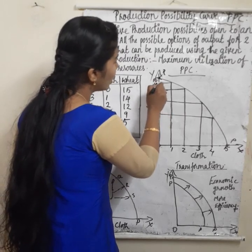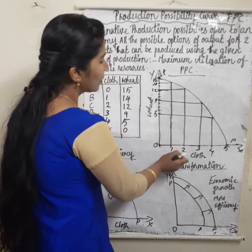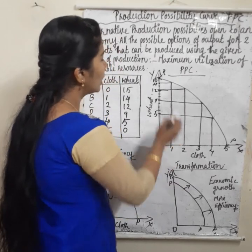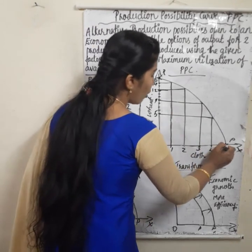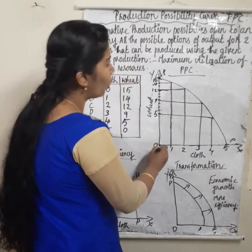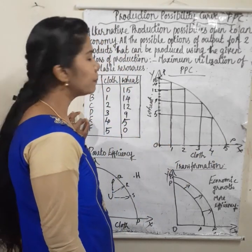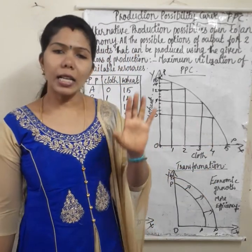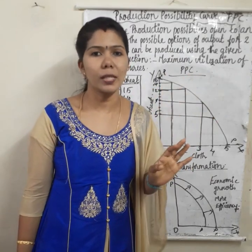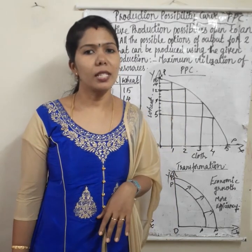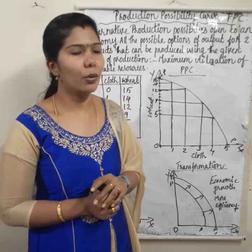Then for 14 units of wheat and 1 unit of cloth; for 2 units of cloth, 12 units of wheat. In order to produce one more unit of cloth, 2 units of wheat are sacrificed. Like this it continues until the maximum of cloth — 5 units — where wheat is 0. This is the production possibility curve, showing that a country can utilize maximum available resources in order to produce more commodities through various alternative combinations of production of two commodities.